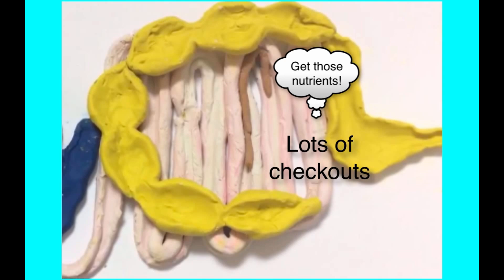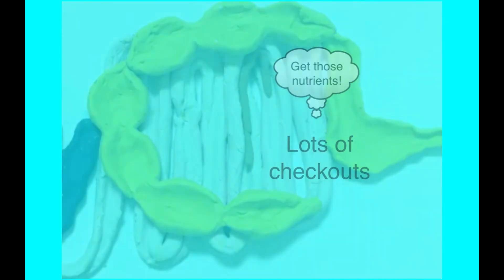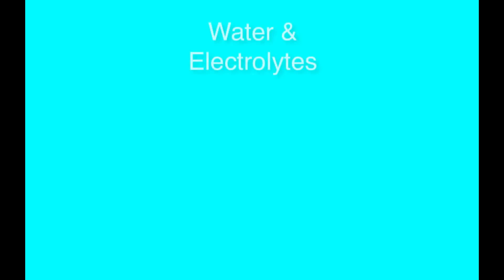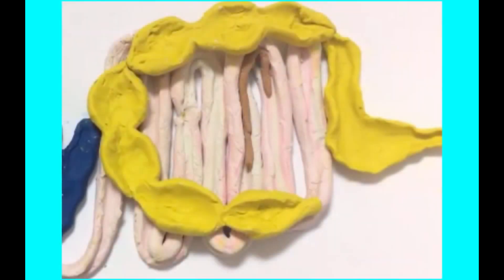So what gets absorbed in the small intestine? Water and electrolytes like sodium, chloride, and bicarbonate. Carbohydrates after digestion to monosaccharides or simple sugars. Proteins after digestion to small peptides and amino acids. Neutral fat after digestion to monoglyceride and free fatty acids. And all of this occurs in about six to 10 hours from when the meal was eaten.